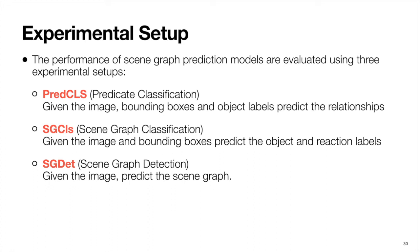Second, scene graph classification, where given the image and bounding boxes, the task is to predict the object labels and relation labels. And finally, scene graph detection, where given just the image, the model has to predict the entire scene graph configuration.